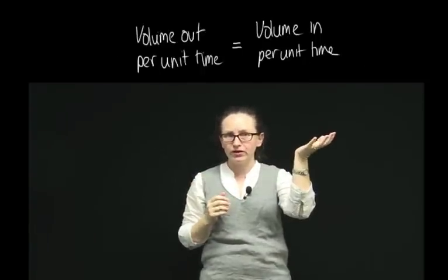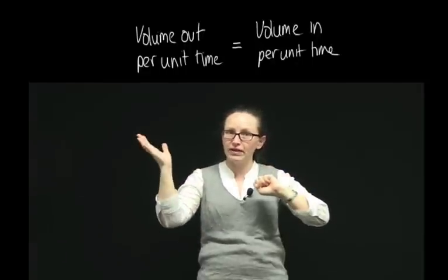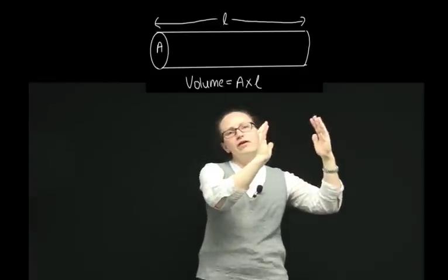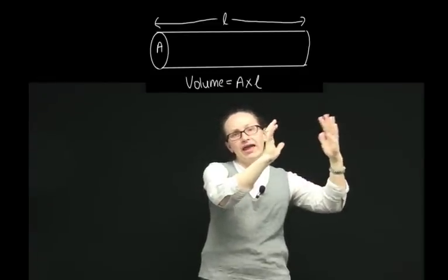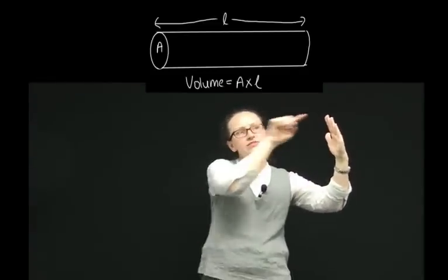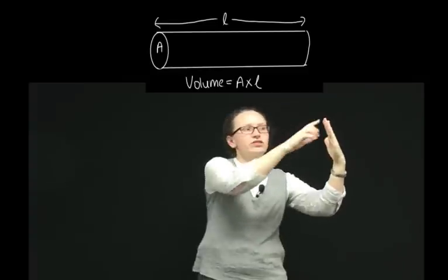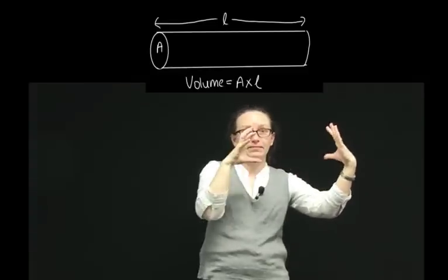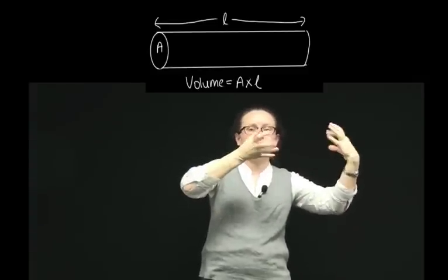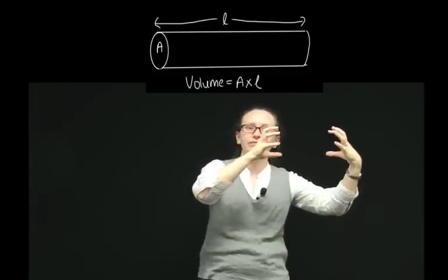We've got the volume in per unit time is equal to the volume out per unit time. The volume flowing through a piece of pipe is equal to the length of the pipe times the surface area of the pipe — that's just the mathematical equation for the volume of a prism.